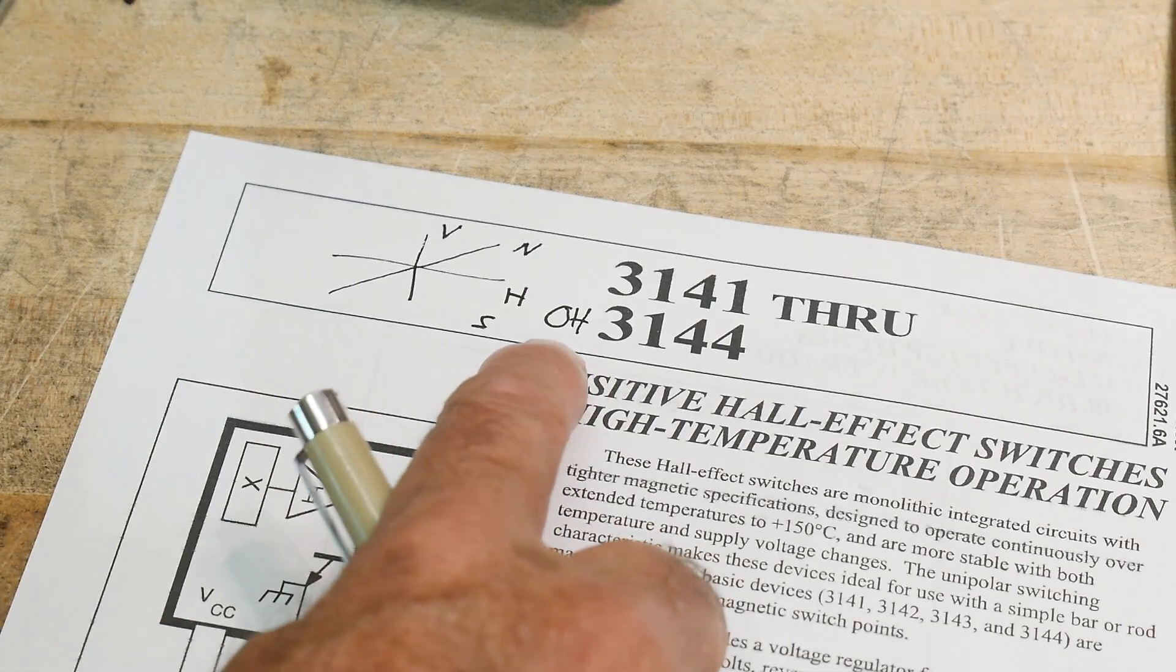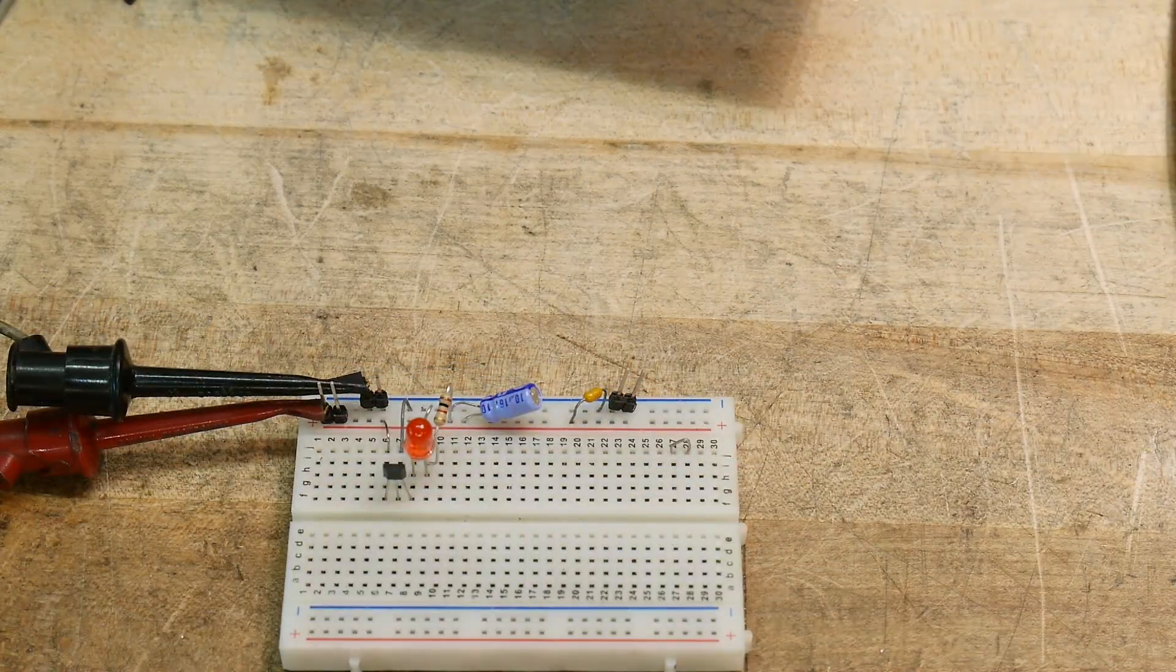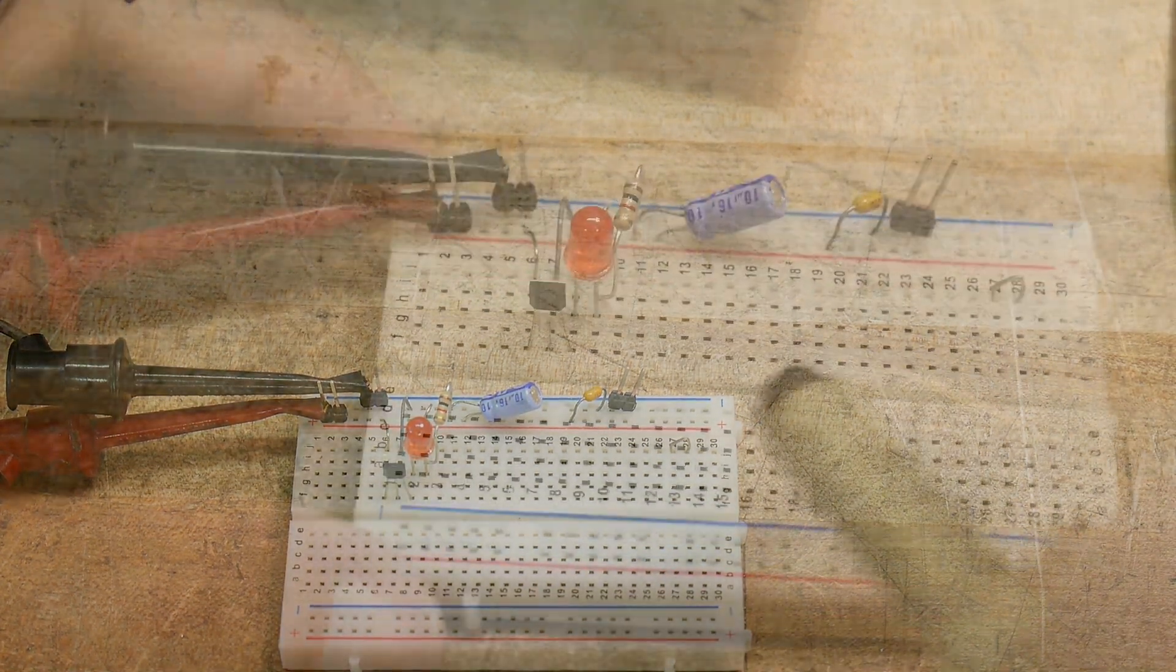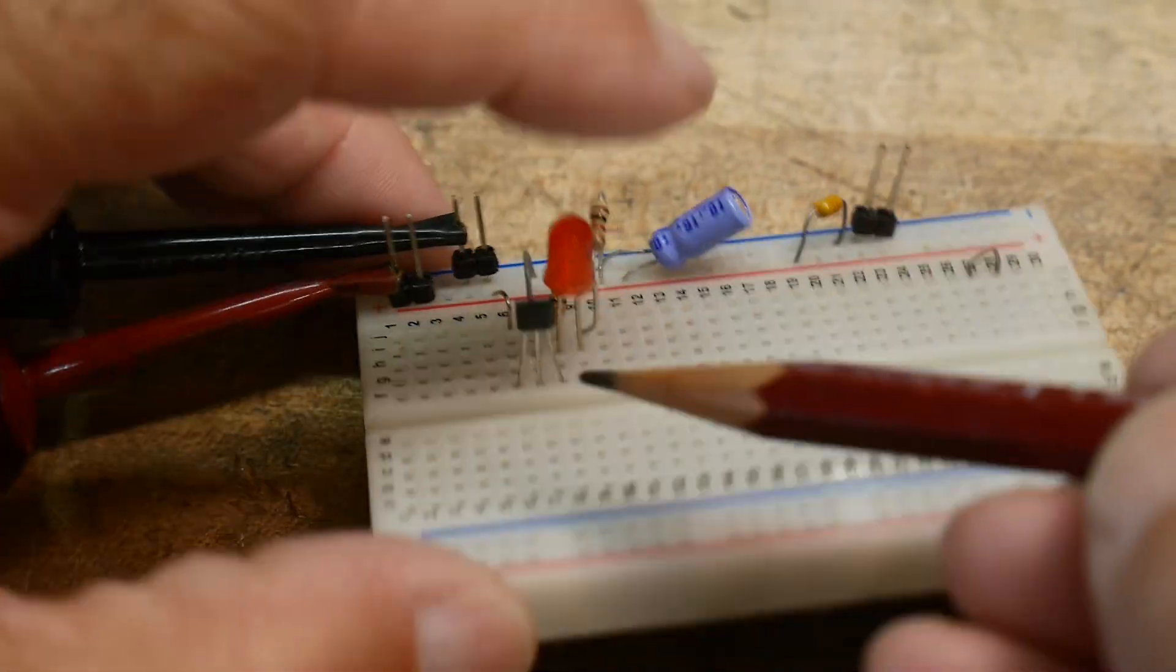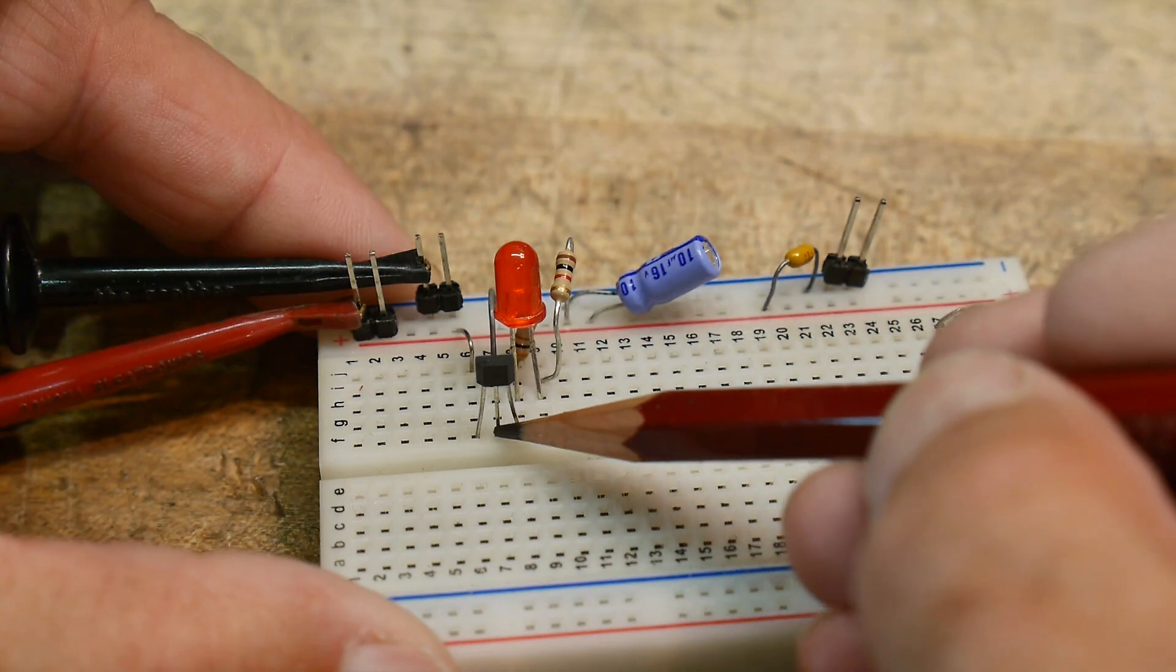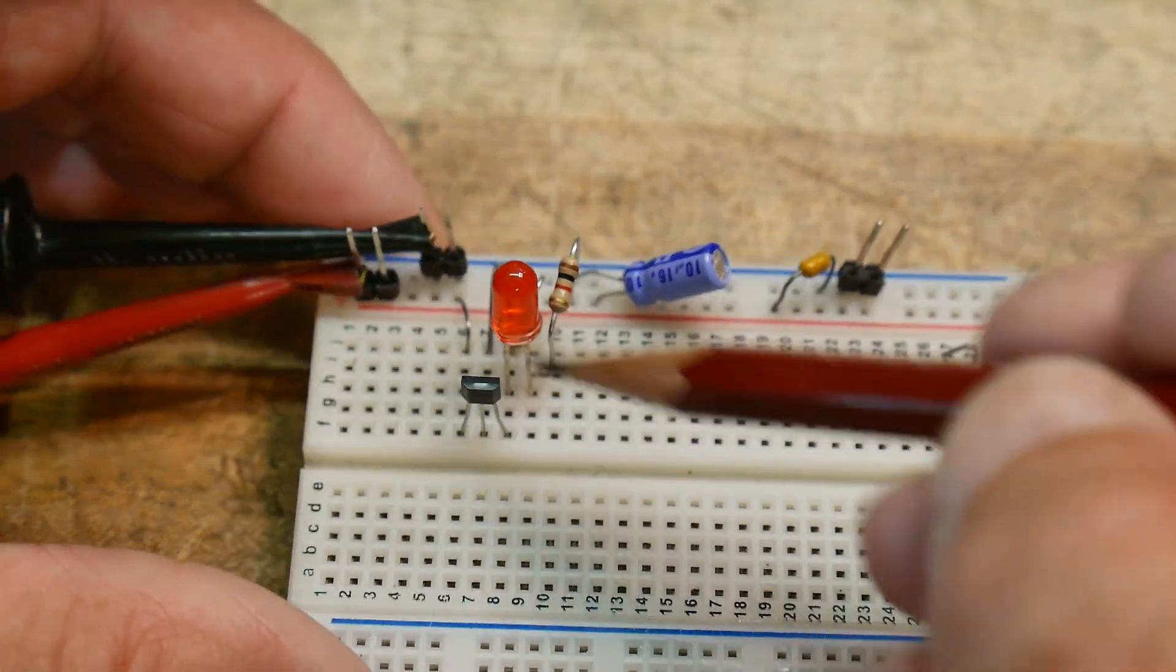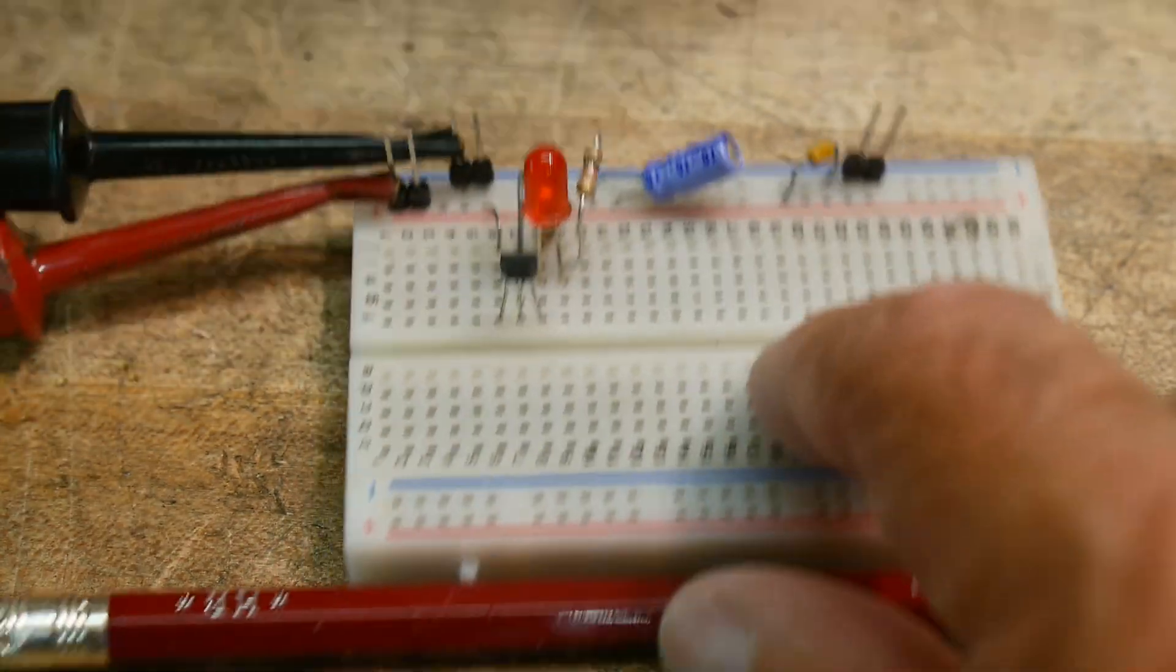So like I said, this is an H. The part I'm going to be showing is a 3144. So I have it on a breadboard here. It's kind of small. Let me zoom down a bit. So this little guy here is the Hall effect sensor. It just looks like a 3-lead transistor.